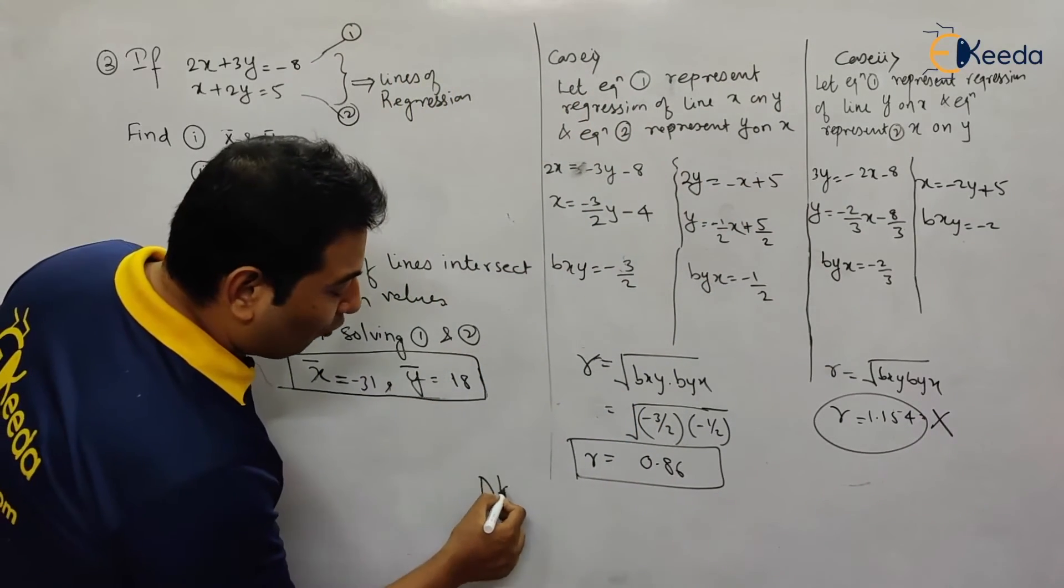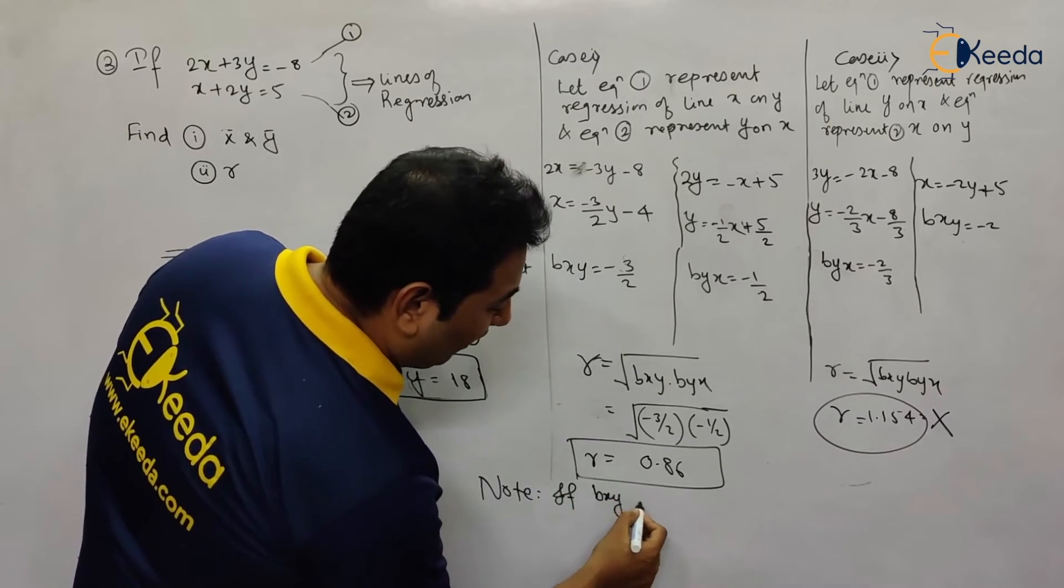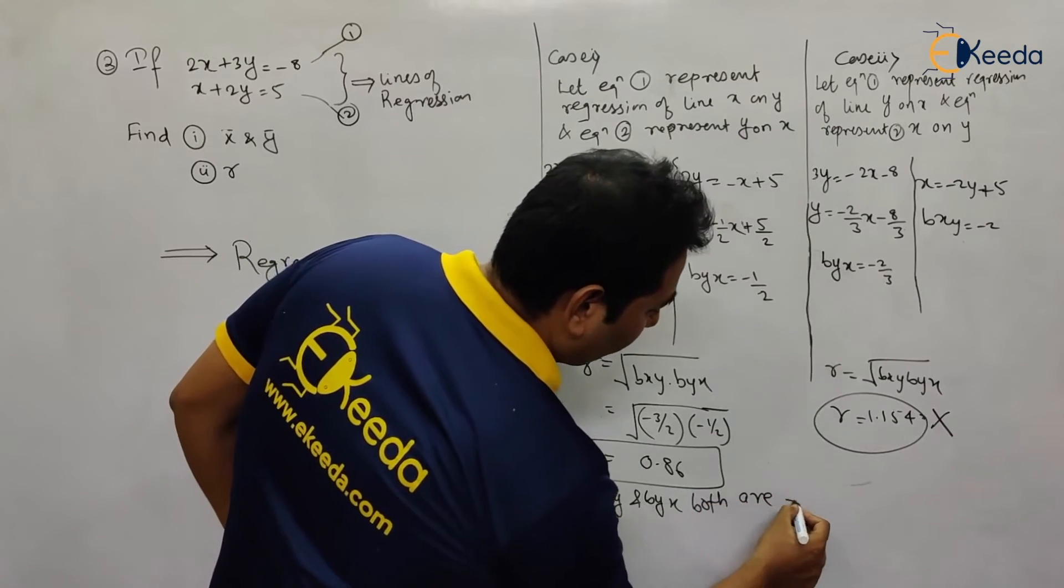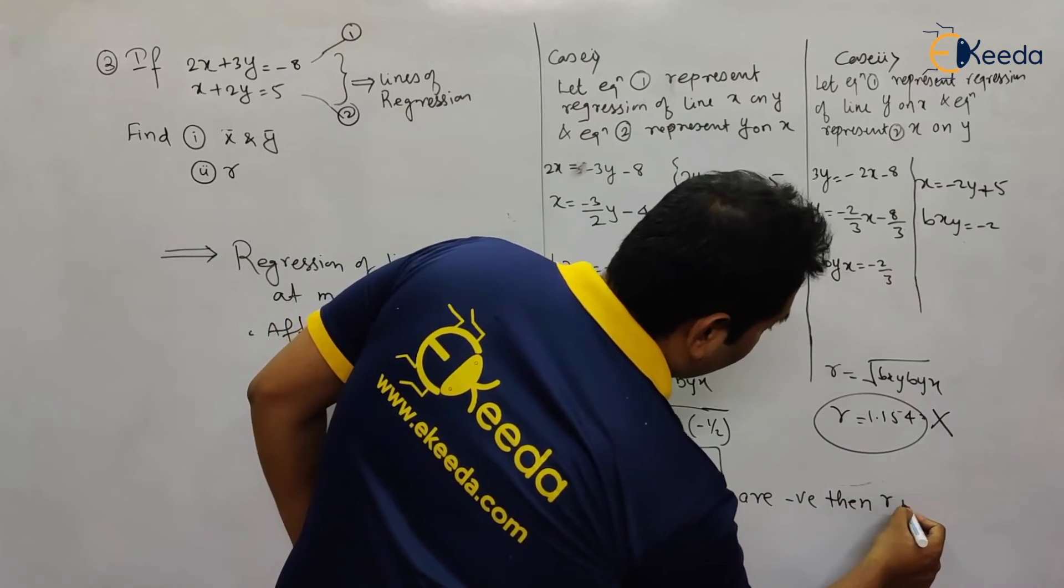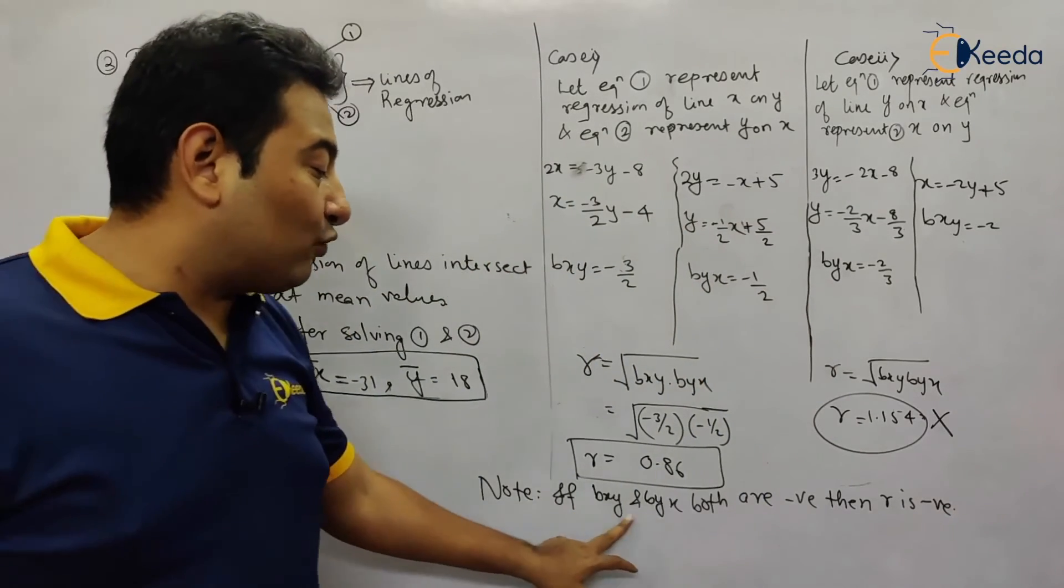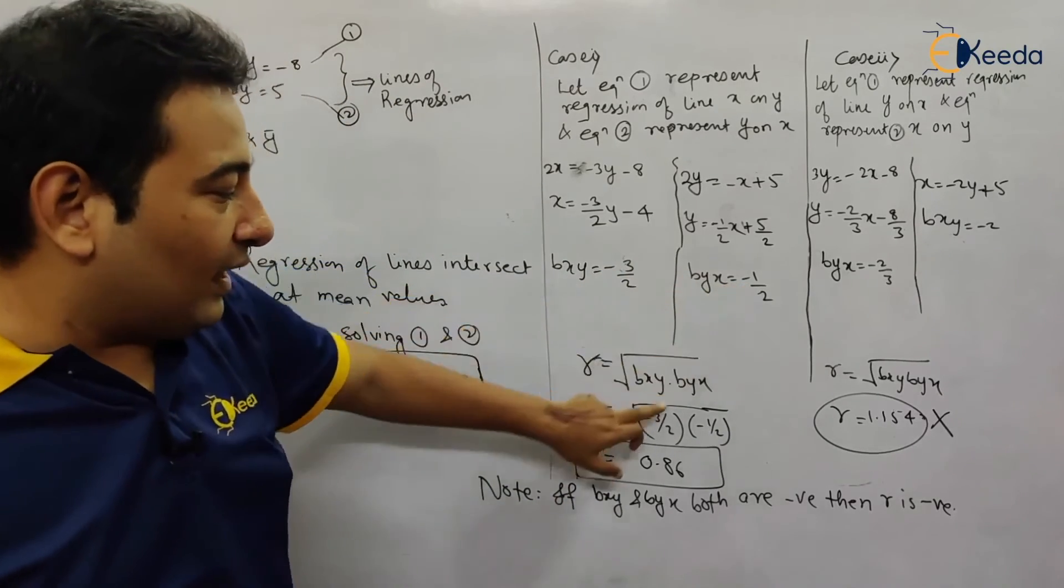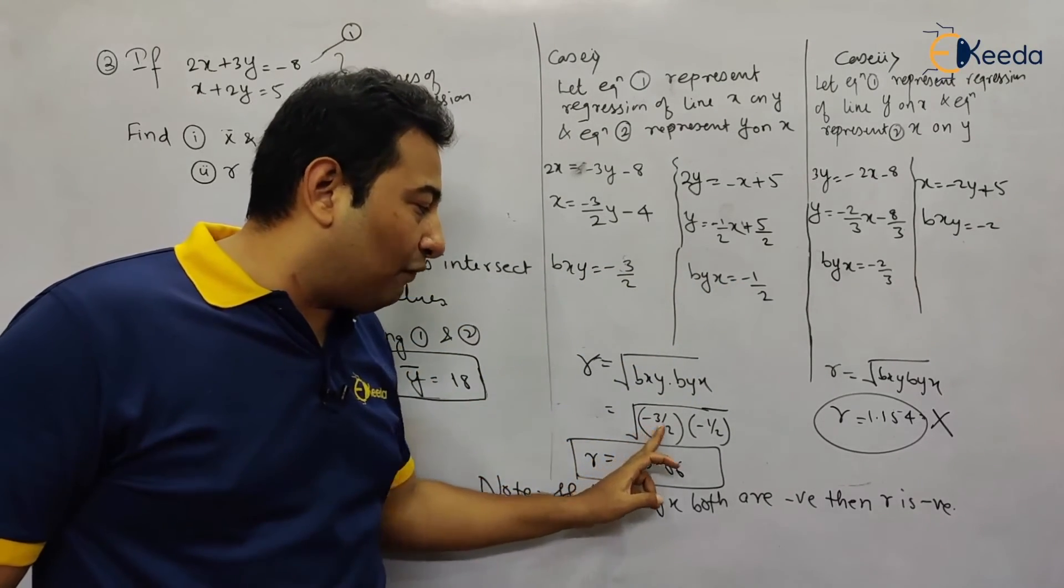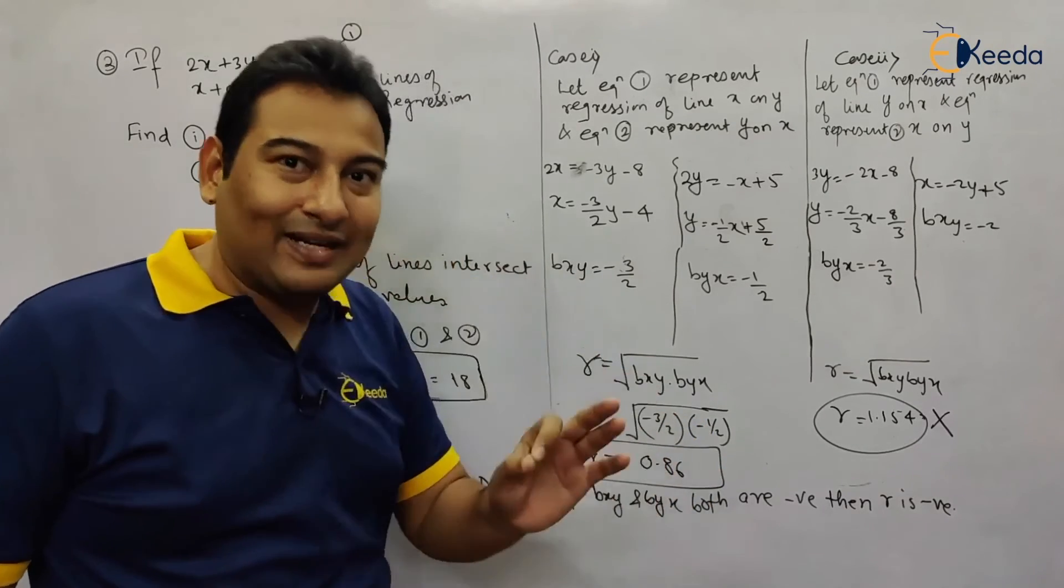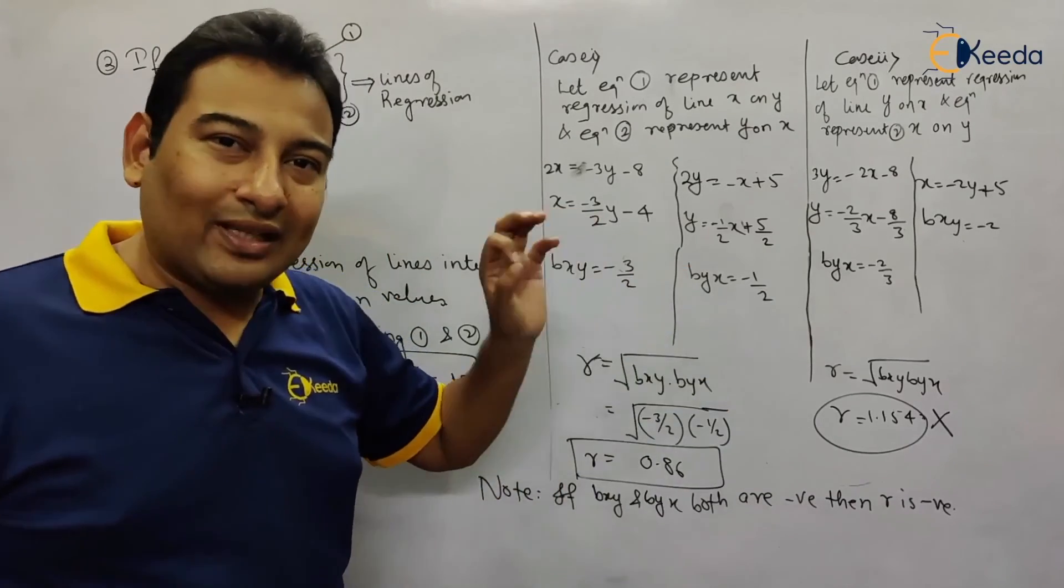The most important point: if bxy and byx are both negative, then r is negative. See, both are negative, and obviously inside the square root, if you multiply them, your answer will be positive because minus times minus becomes plus. But remember, if both are negative, r should be negative.